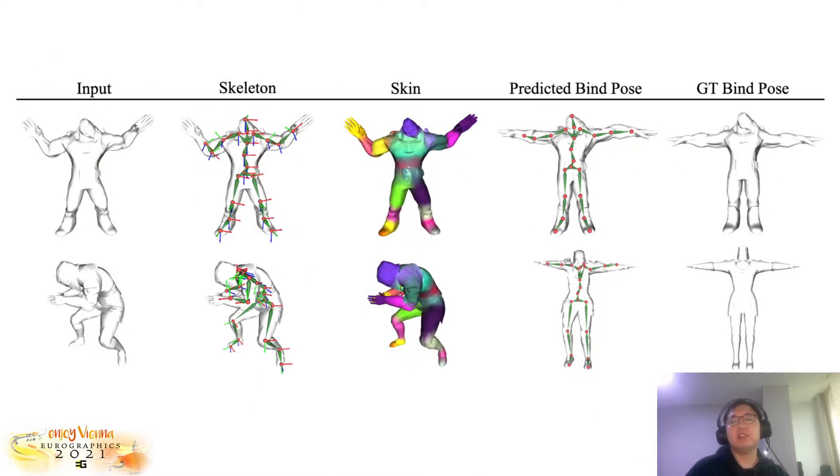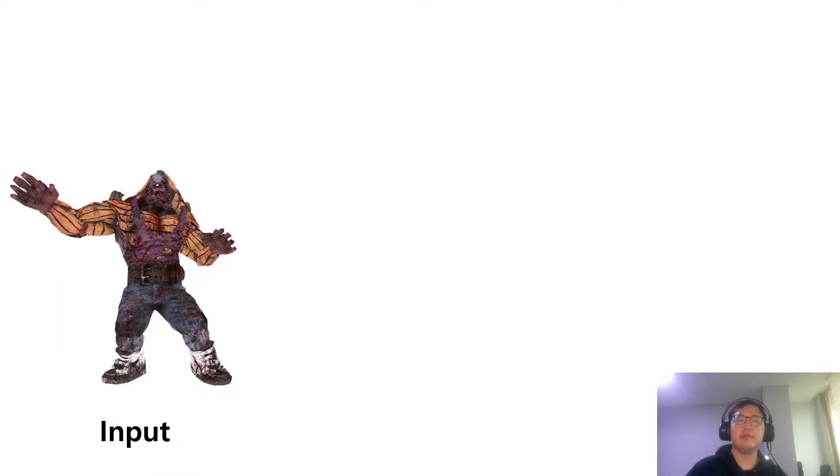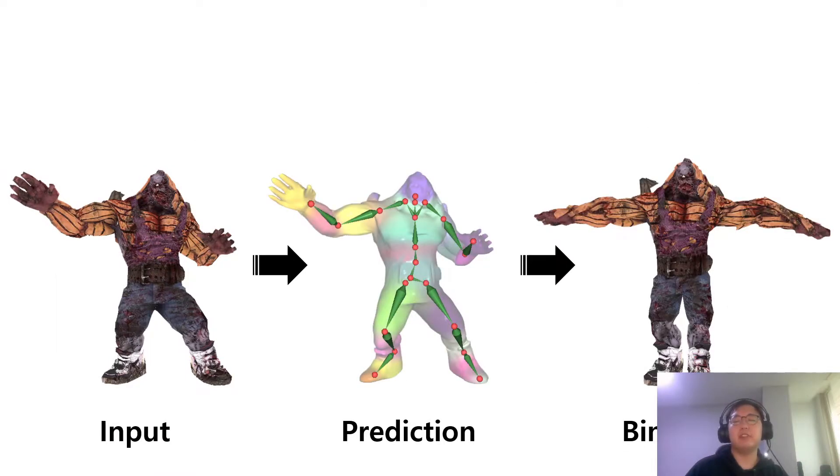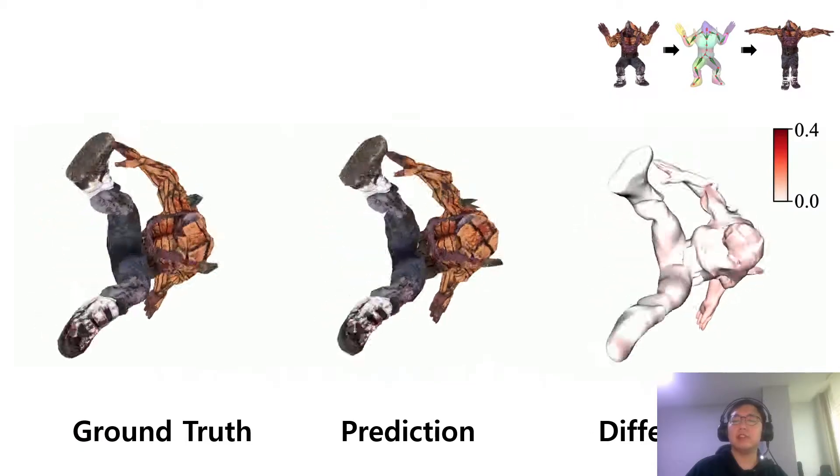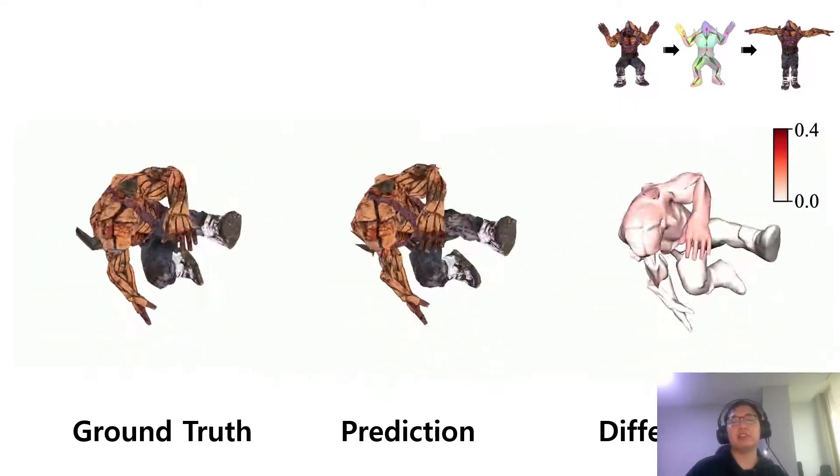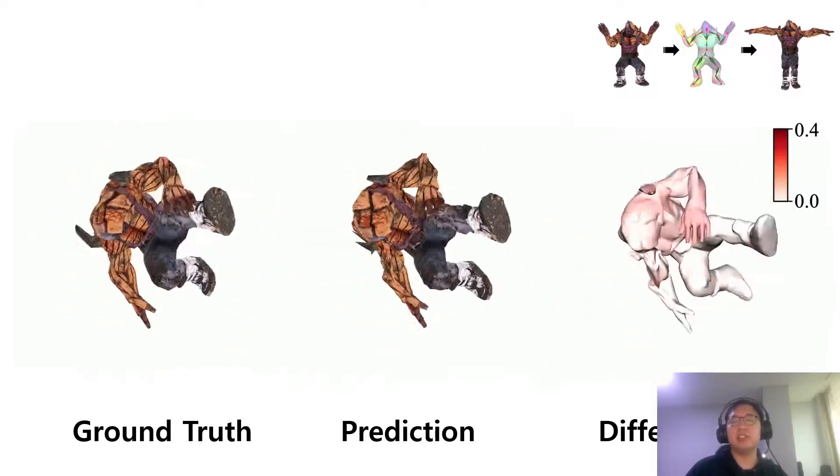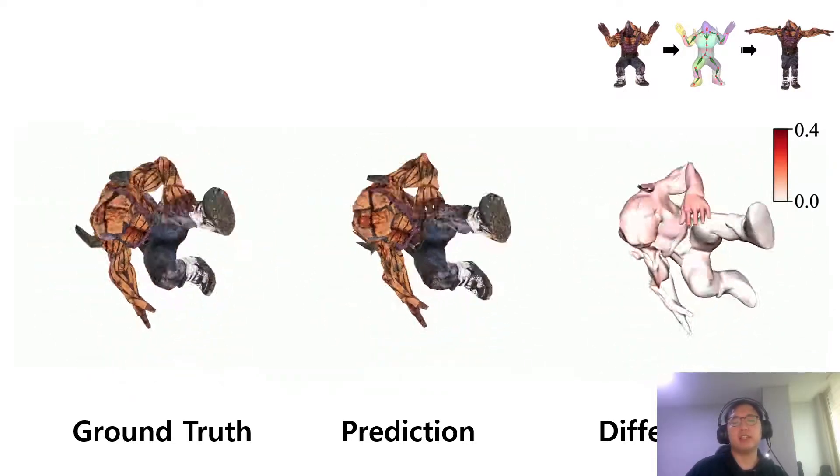This is the full result of our auto-rigging pipeline. Using our rigging method, we could successfully transform the characters in arbitrary poses to the bind pose. Following are the results combined with motion retargeting from Mixamo after converting our mesh to the bind pose. We can see that the reanimated characters look plausible and do not deviate much from the animation generated using the ground truth skeleton and skin weight.